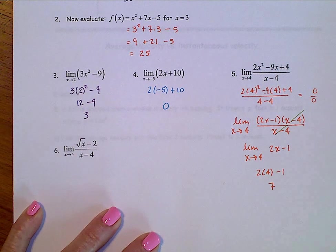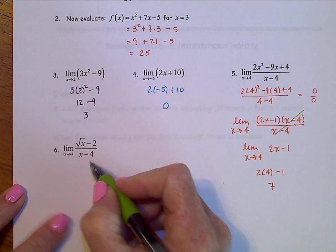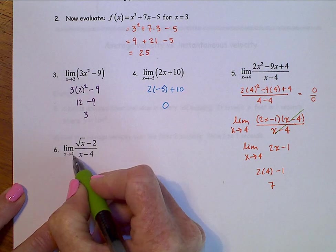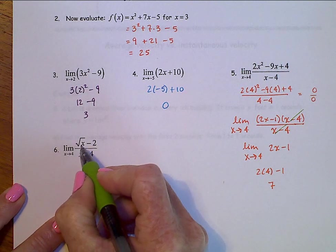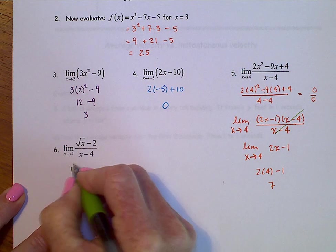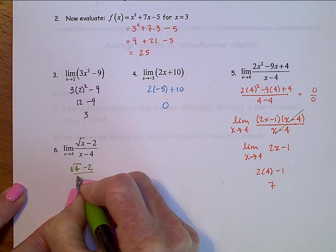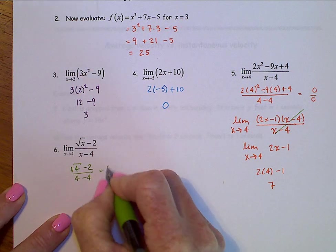When we look at this example over here, again, we always try and substitute in first. And if we substitute in, we are going to get square root of 4 minus 2 over 4 minus 4, 0 over 0 problem.